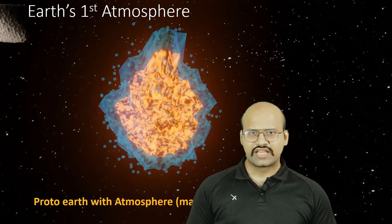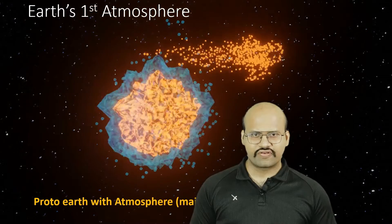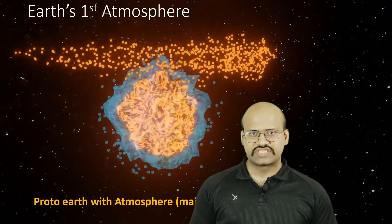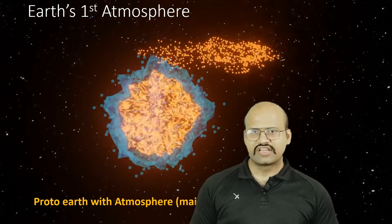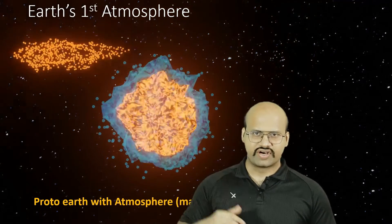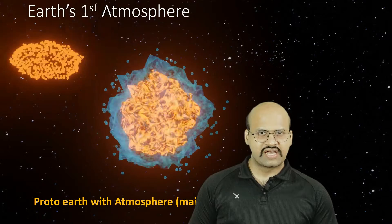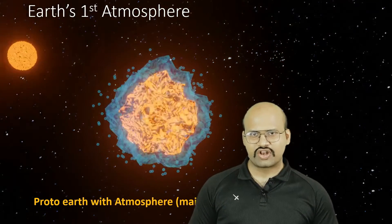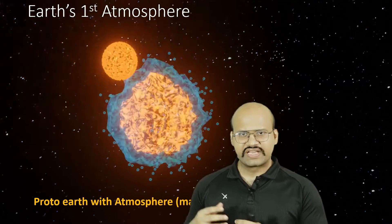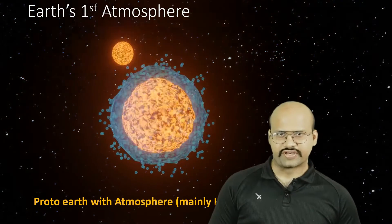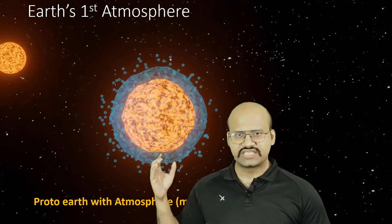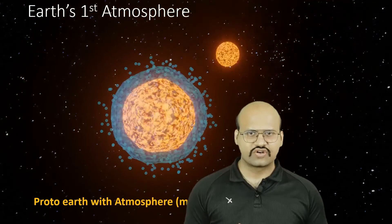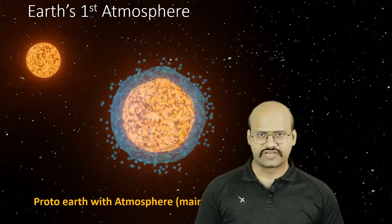Secondly, there was a formation of the Moon, where a large asteroid came and collided with our Earth, forming the Moon. During this process we also lost a lot of gas from our atmosphere, and therefore we see that there was a depletion of hydrogen and helium from our atmosphere.